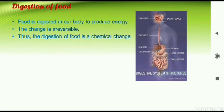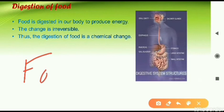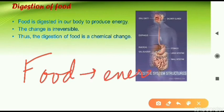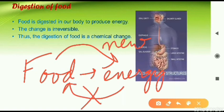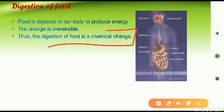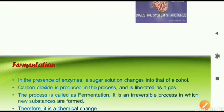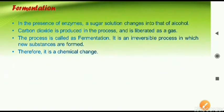The fourth example is digestion of food. After we have eaten, food is digested in our body and converted into energy — our body gets energy from that food. Something new is forming, and from that energy we cannot get the food back again. This change is irreversible. Both conditions are fulfilled, so digestion of food is a chemical change.